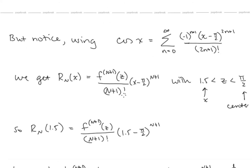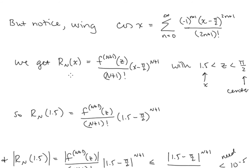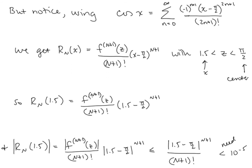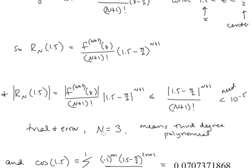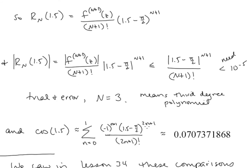Now let's make an approximation using Taylor polynomials centered at x equals pi over 2. Again we look at the remainder term, and again we bound our derivative by 1. So we need |x minus pi over 2| to the (n+1) over (n+1) factorial to be less than 10 to the negative 5th. Using trial and error, we get n equals 3, meaning we use the third degree polynomial centered at x equals pi over 2. The third degree polynomial has upper limit of n equal to 1, and we get this approximation.